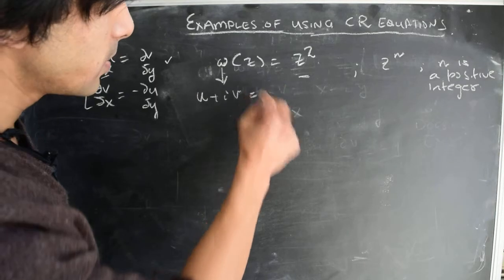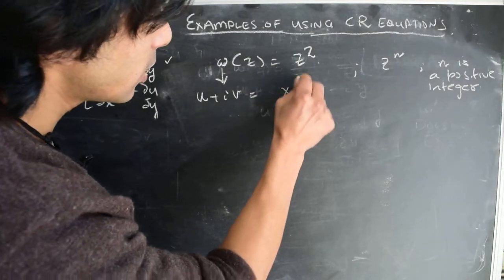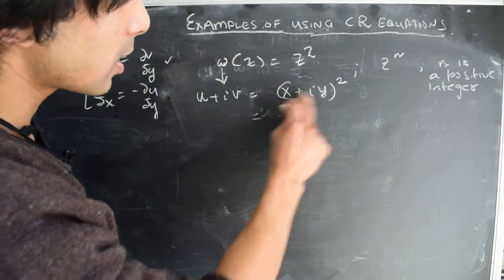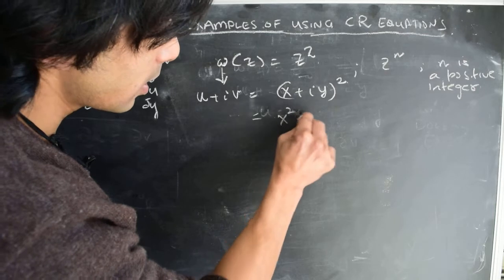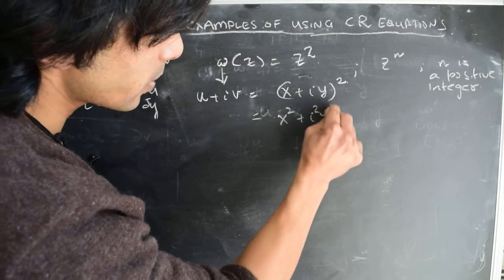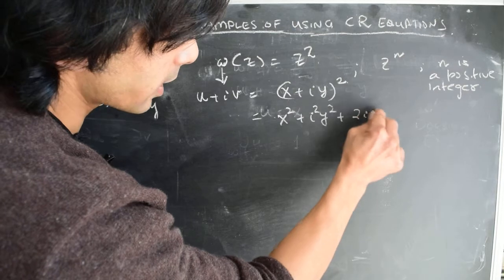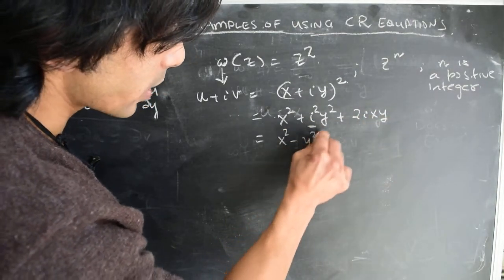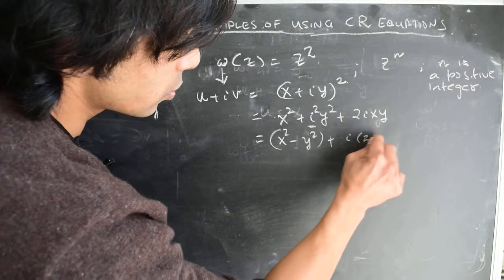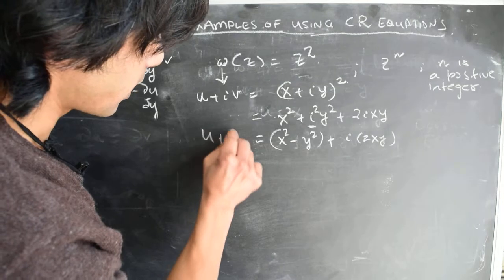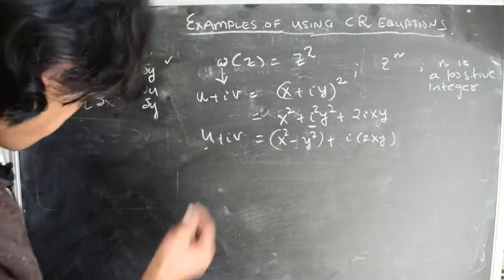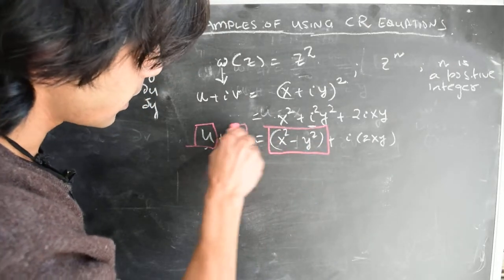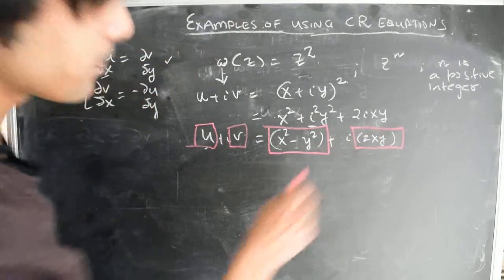Now, U+iV for this particular case should be (x+iy)². When we square this out, we get x² + i²y² + 2ixy. Since i²= -1, this gives us x²-y² + i(2xy). Therefore, U = x²-y² and V = 2xy.